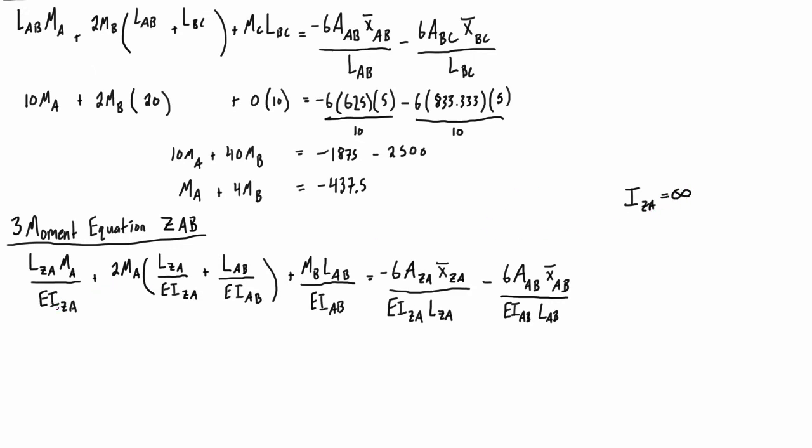That means that all these EI terms for EI_ZA are going to be equal to infinity. And basically, anytime we have infinity in the denominator of a fraction, then that whole term is going to zero. So this whole term here is going to go to zero, this term here also will go to zero, this term here goes to zero.